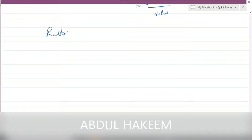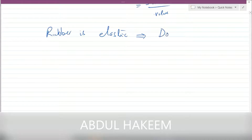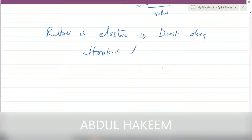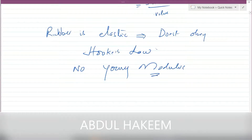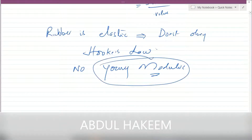Rubber is elastic but it does not obey Hooke's law, so there is no Young's modulus for rubber. A material which is solid and elastic and during elasticity obeys Hooke's law will have a Young's modulus.